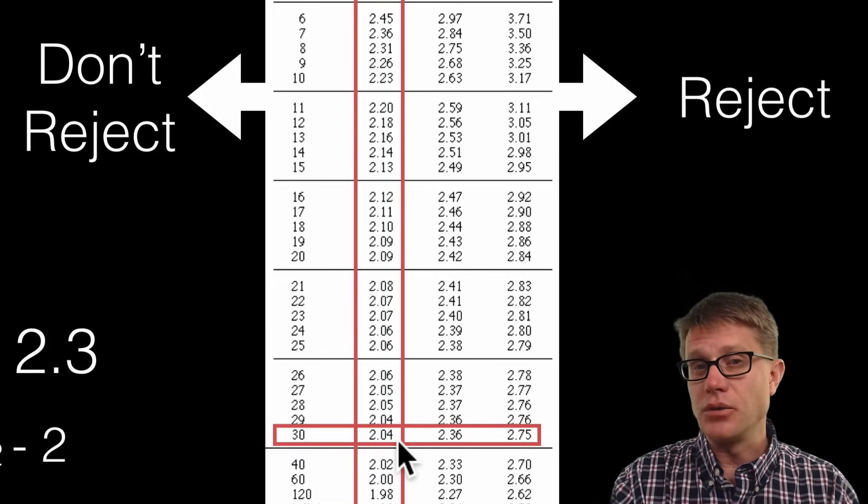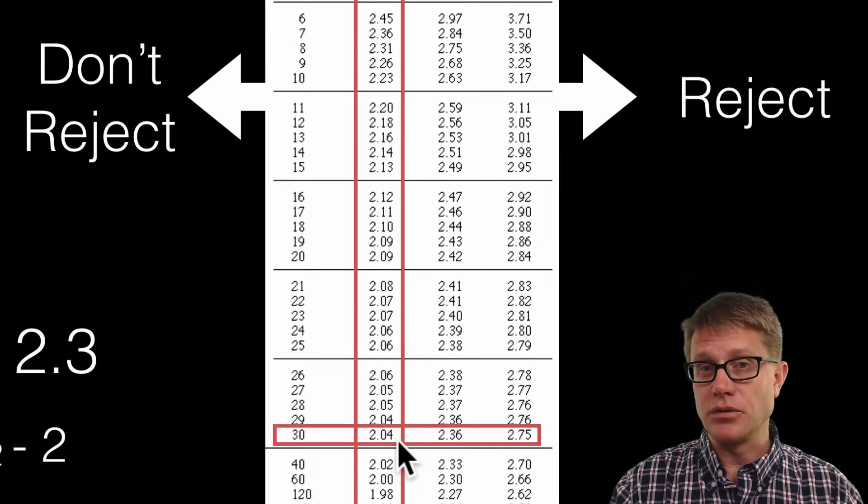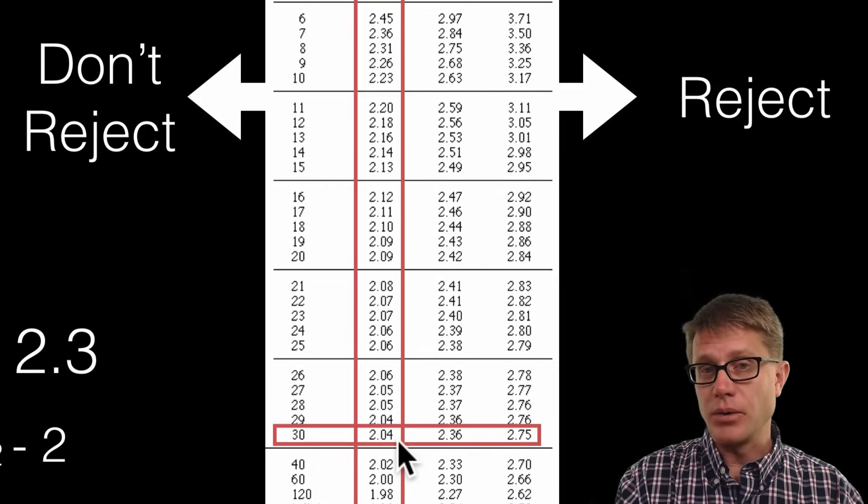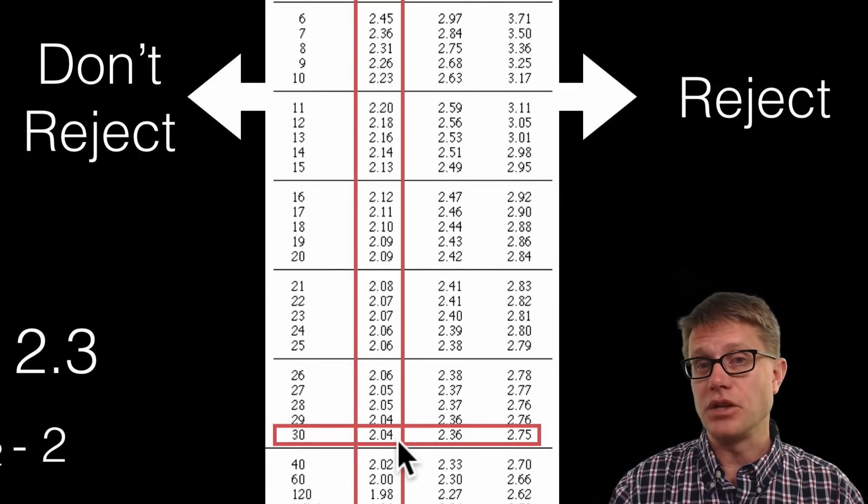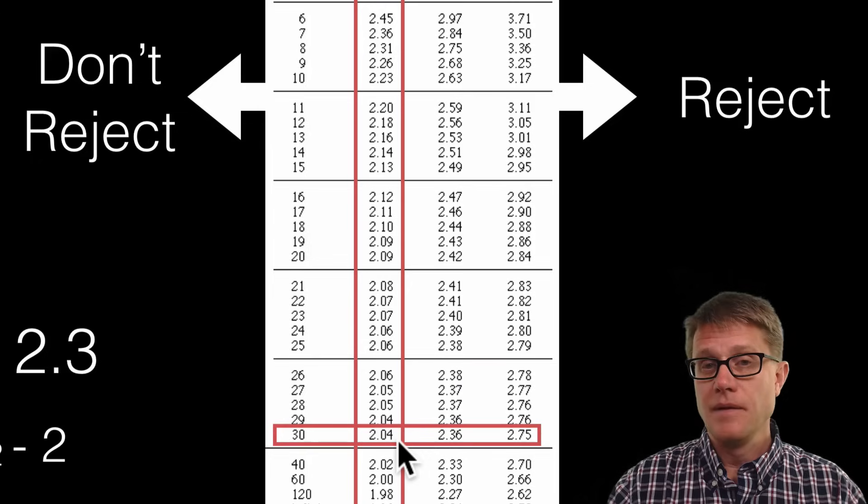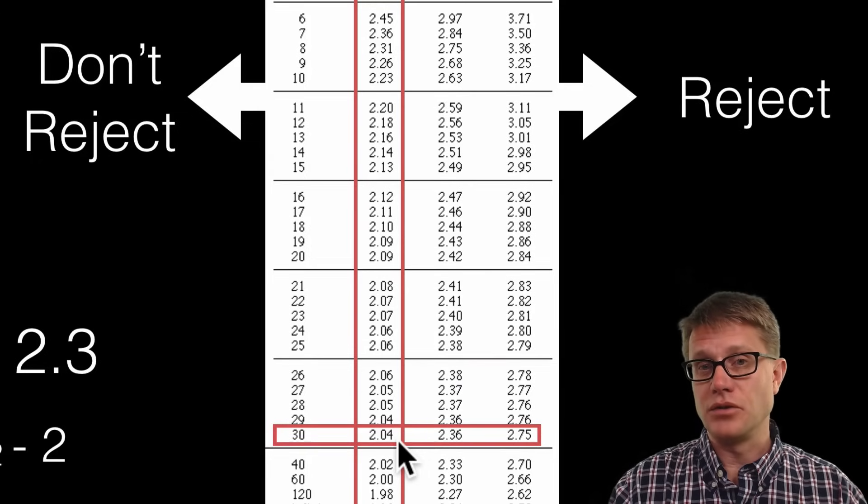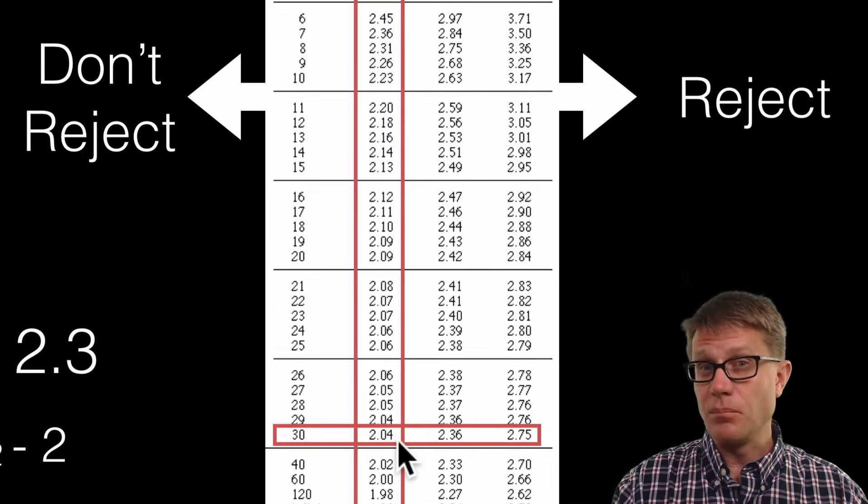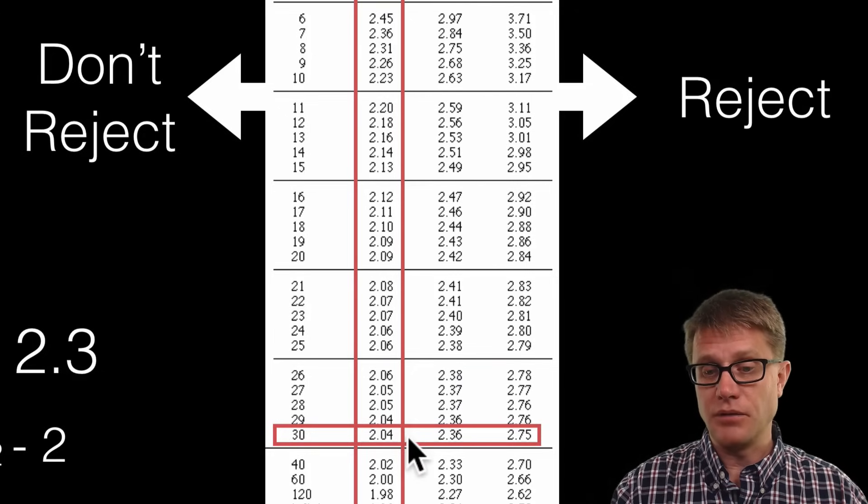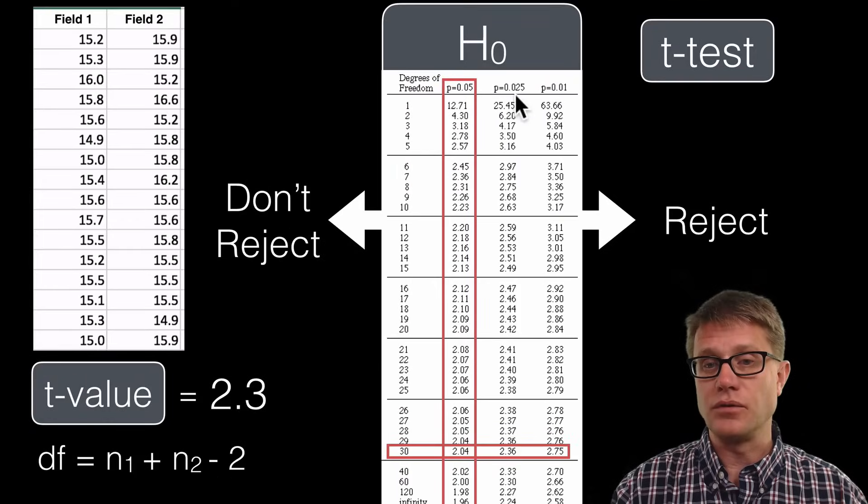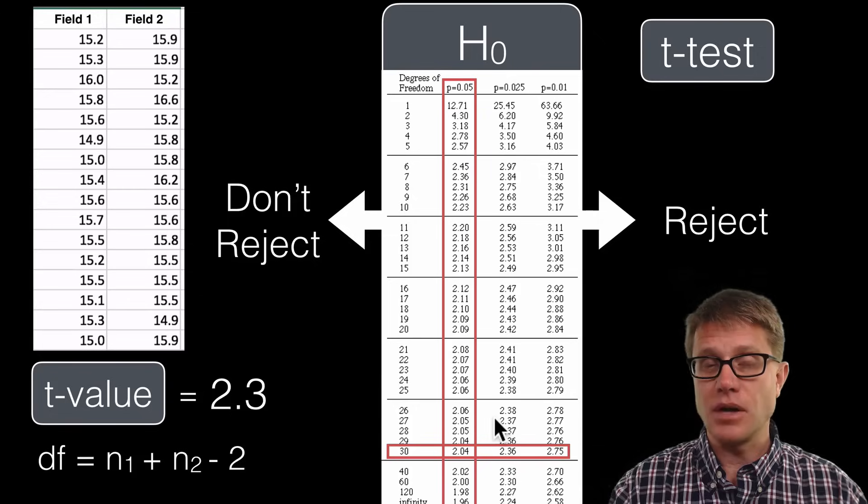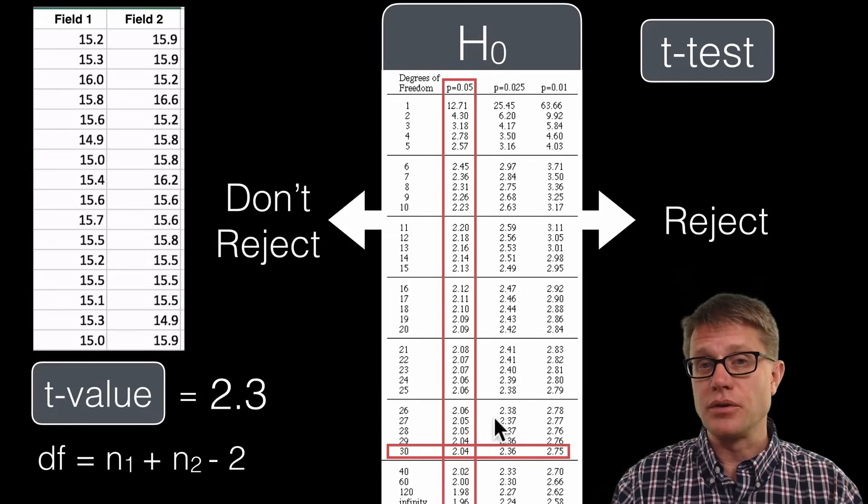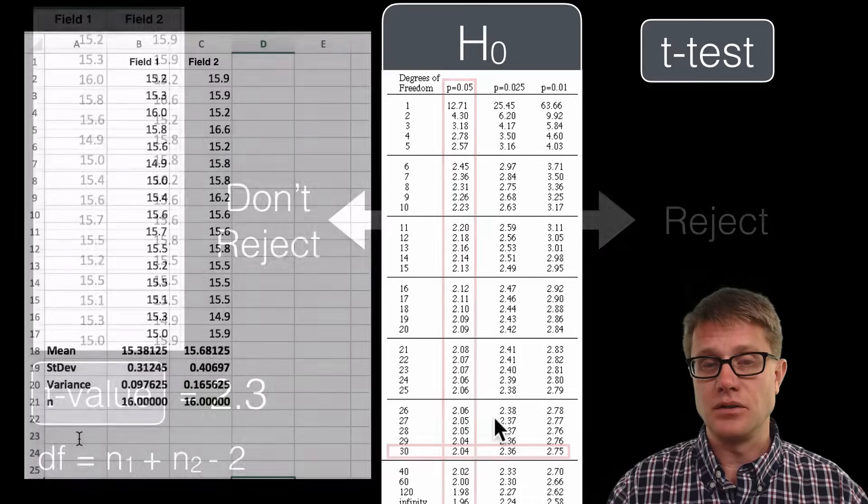Is our t-value higher than that? This is where we're doing the actual t-test. Are we higher than 2.04? We are. So what does that mean? We're going to reject our null hypothesis. That means there is something statistically significant between these two sample sets. It's not much higher than that—it's just 2.3. If we look at the 0.025 probability, we're actually lower than that. So we're not positive, but we're pretty sure there's something statistically significant between these two.